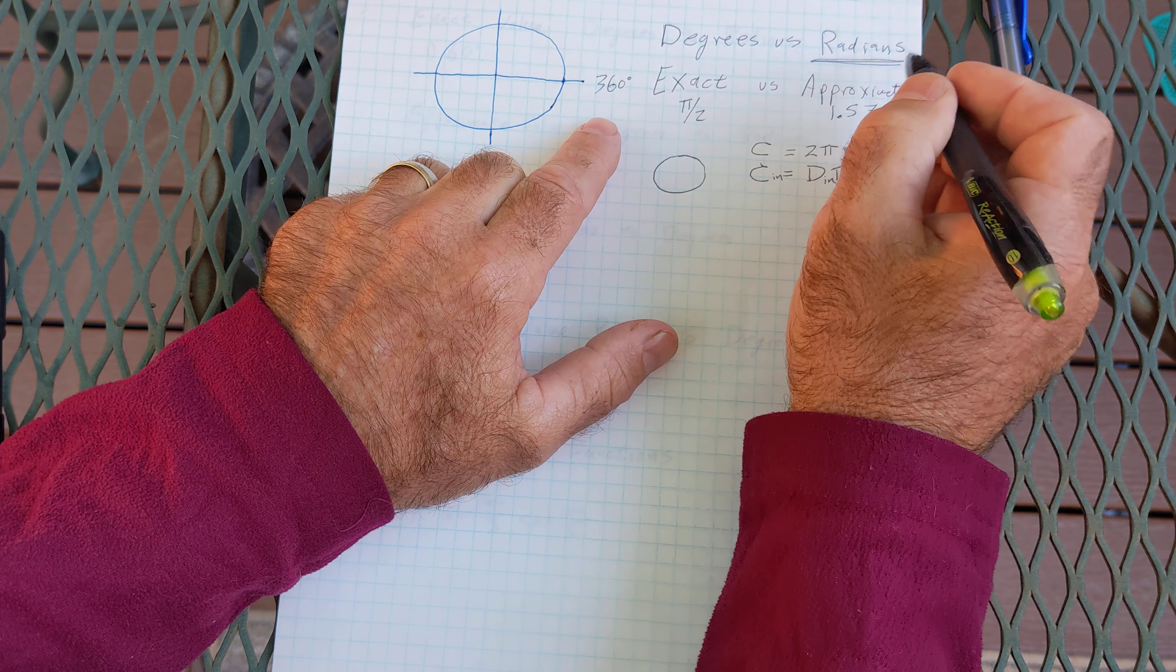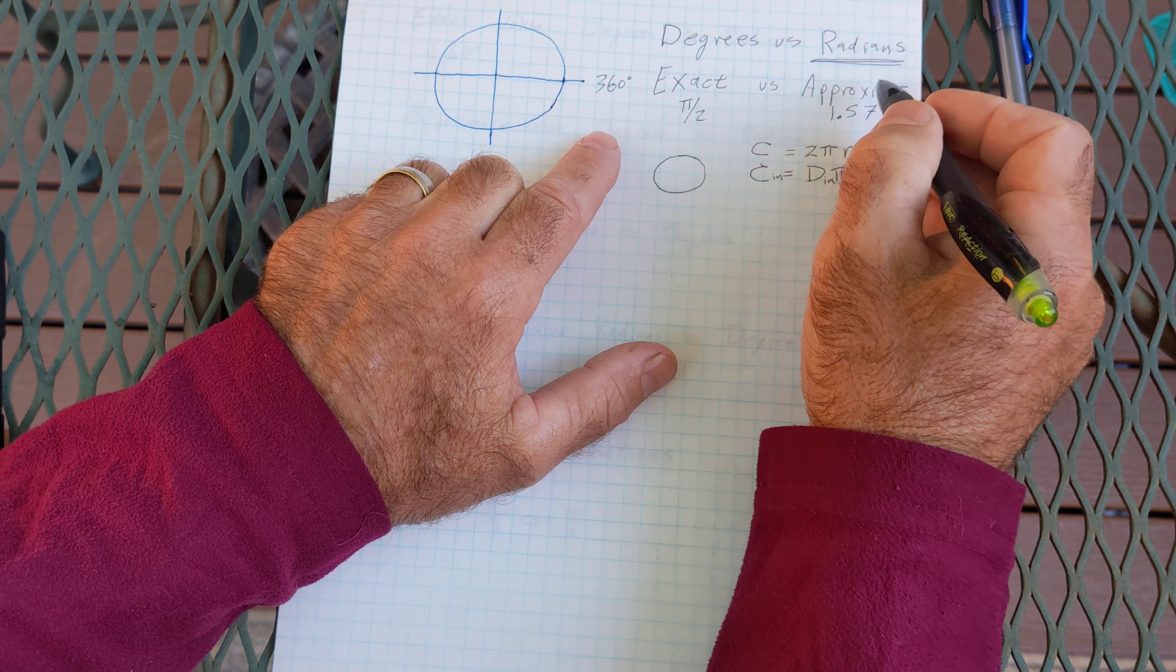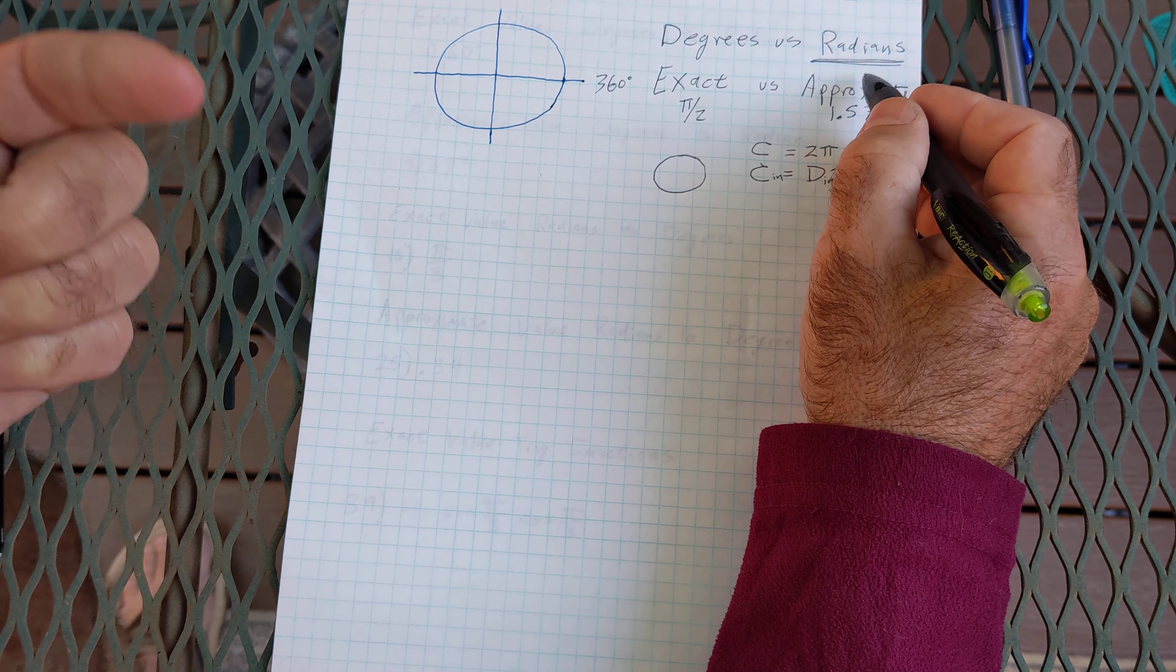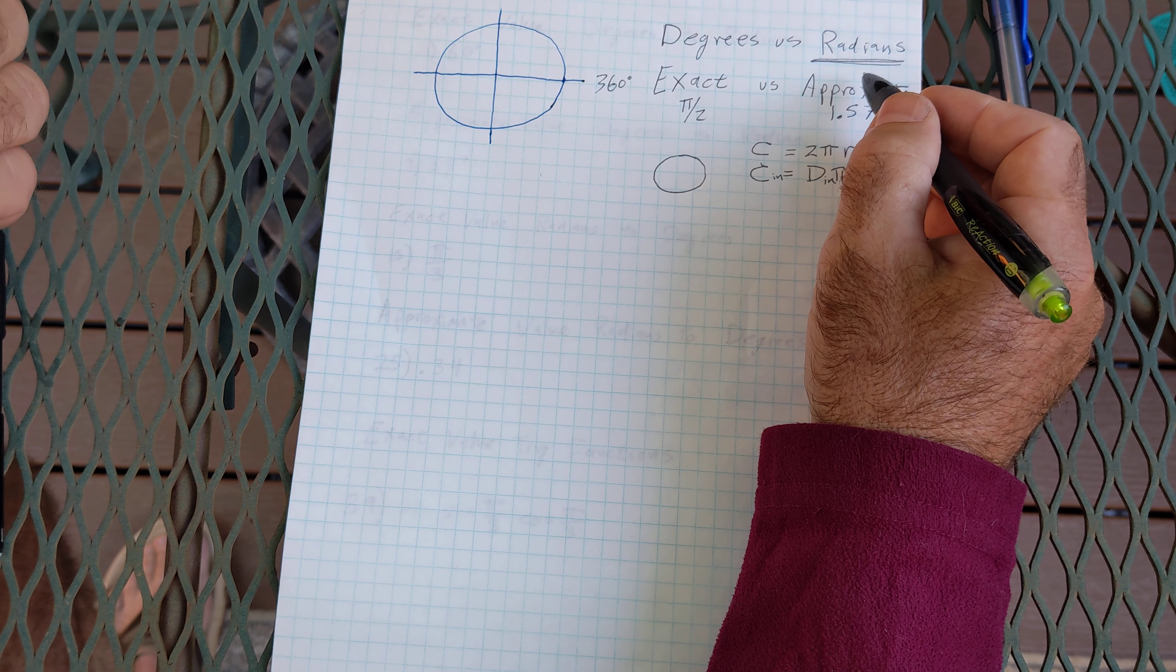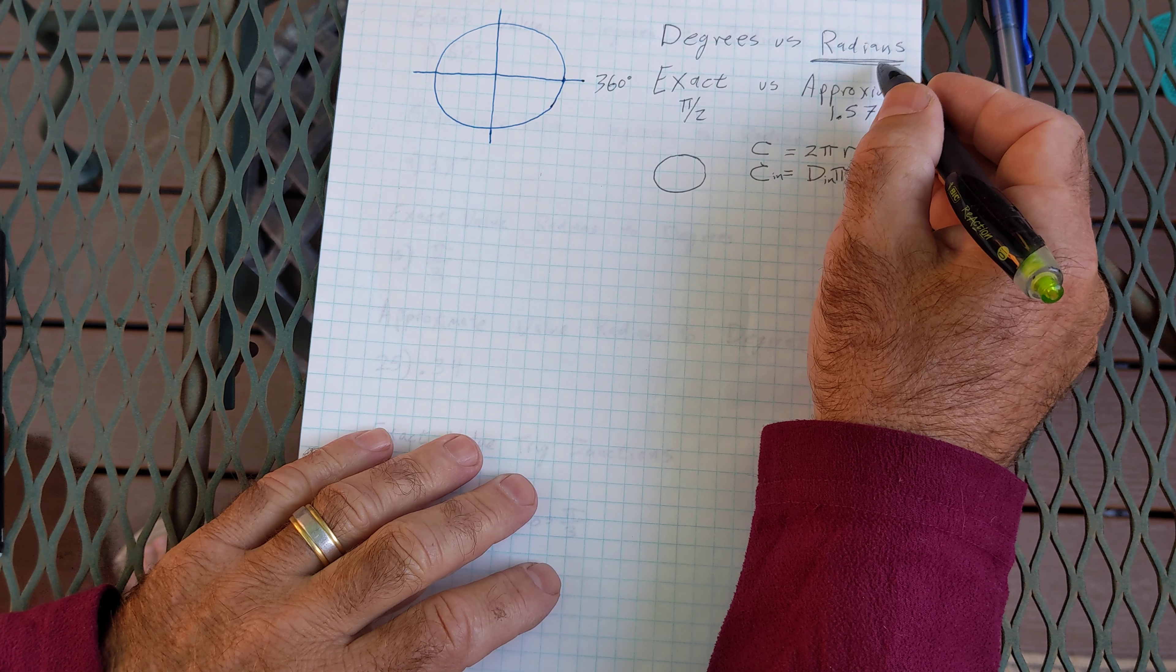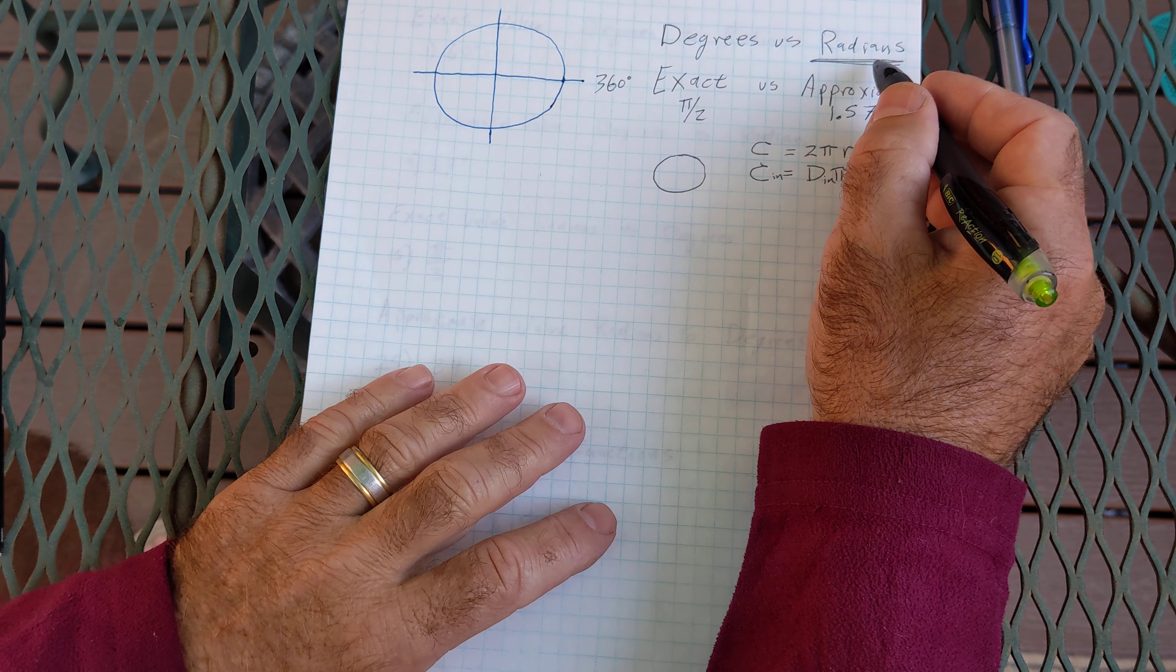Whenever you're working in radians there won't be any value or units attached to it because it's unitless. So that's the whole reason we're going to radians is that we can apply any kind of units we want in an application problem if it's in radians. And I'm going to show you why radians are unitless.